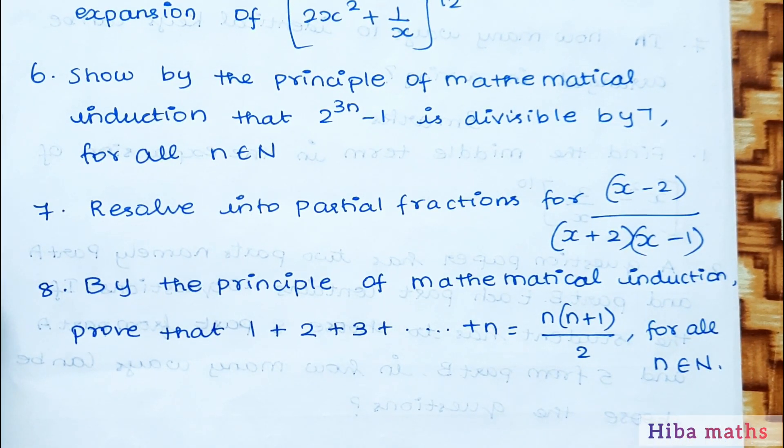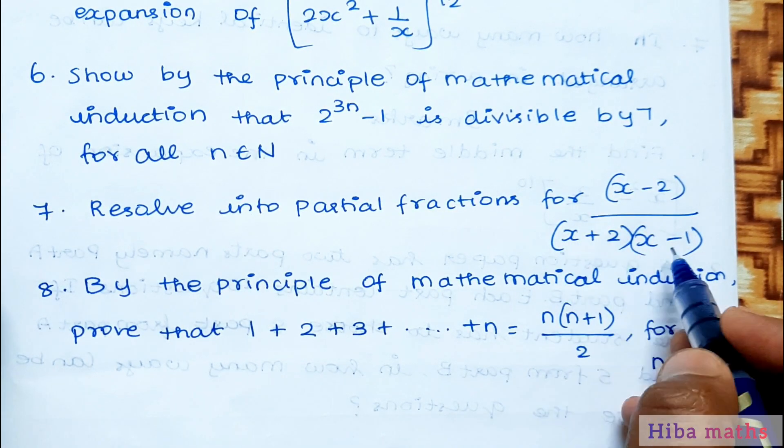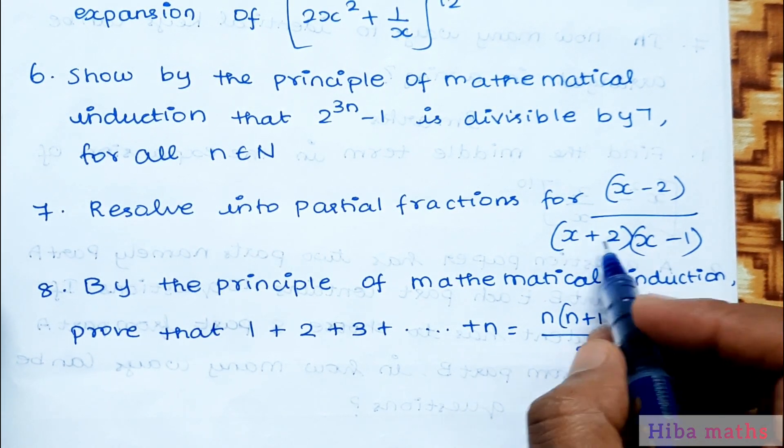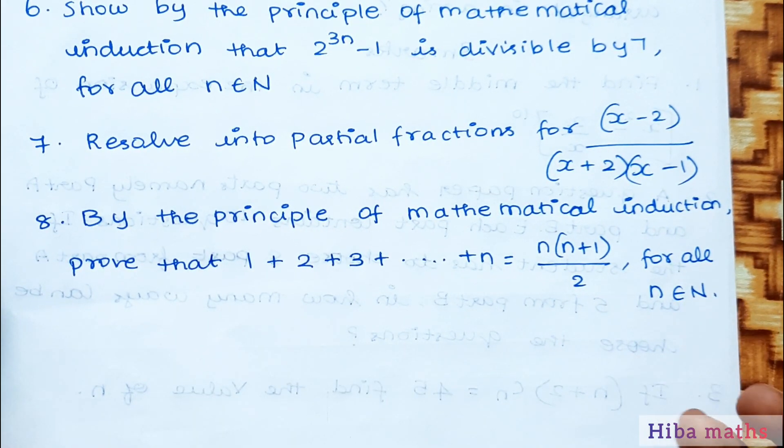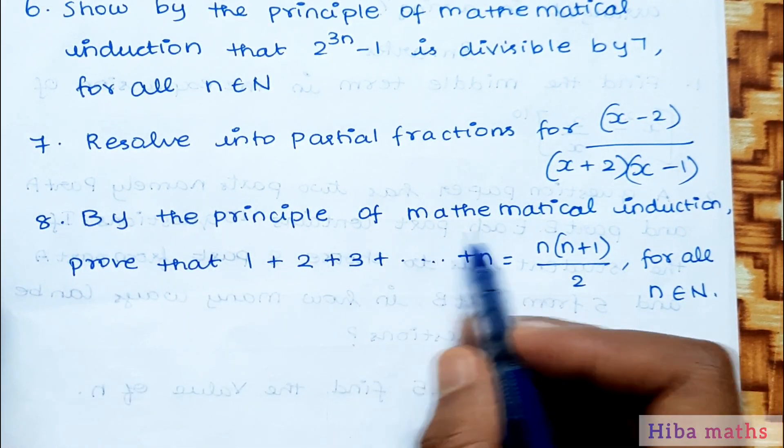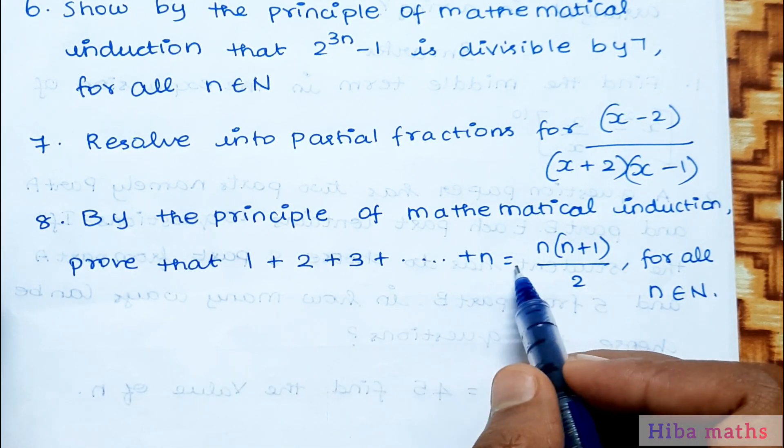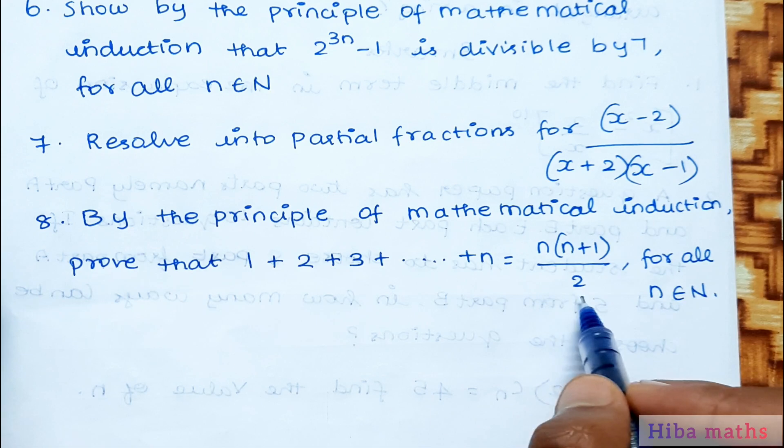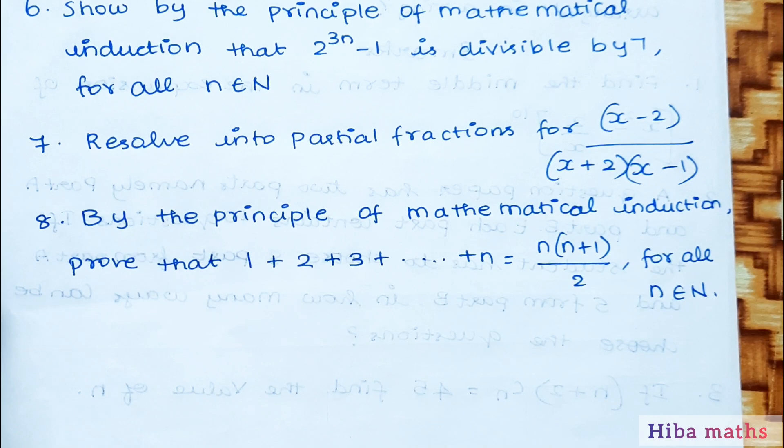Next to partial fractions, we will see the seventh question on mathematical induction. By the principle of mathematical induction, prove that 1+2+3+...+n is equal to n(n+1)/2 for all n belongs to natural numbers.